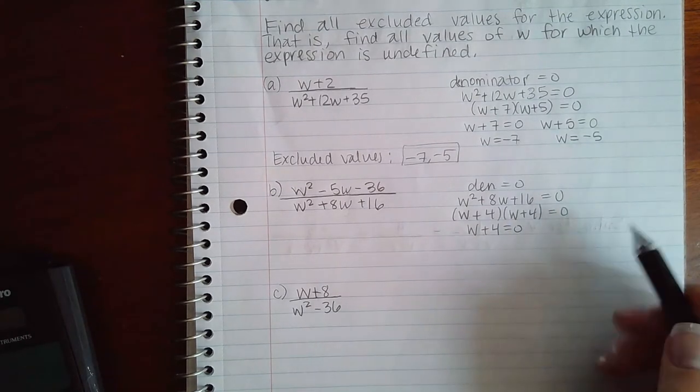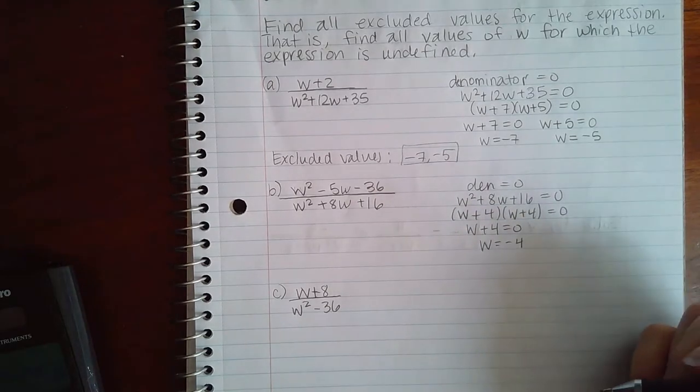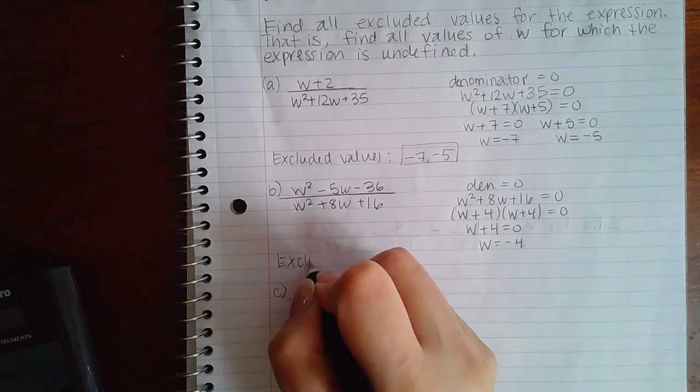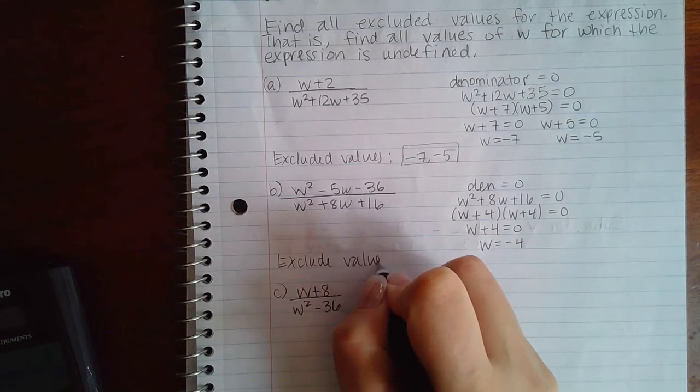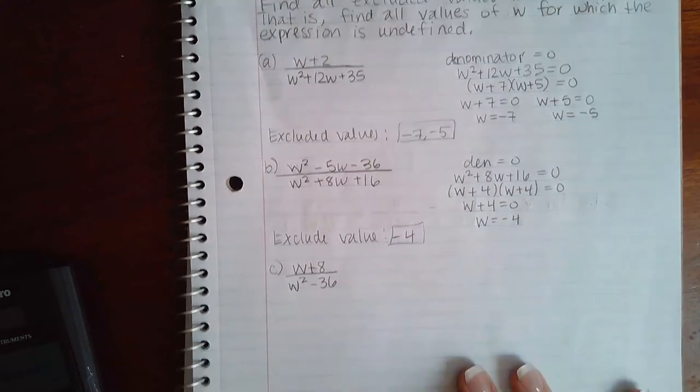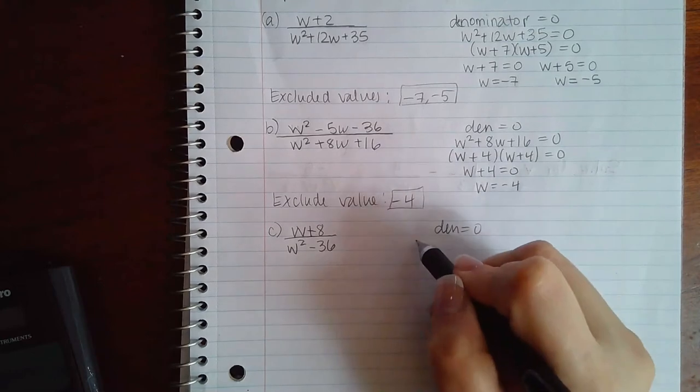So really W equal to negative 4 is the only solution here. That means I only have one excluded value and that is negative 4.